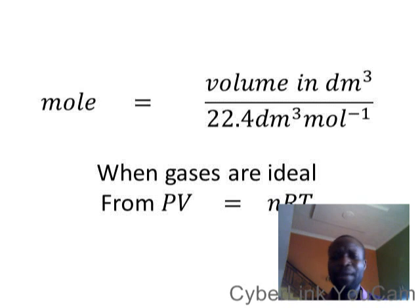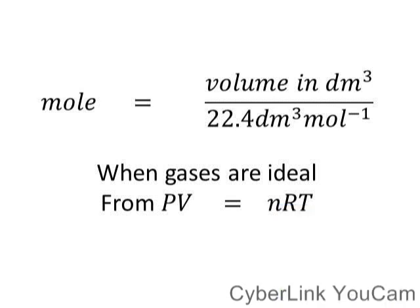Number of moles is equal to volume in dm³ over 22.4 dm³ per mole. So, when gases are ideal, take note of that. When gases are ideal, PV equals NRT.